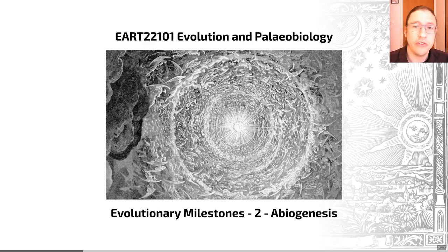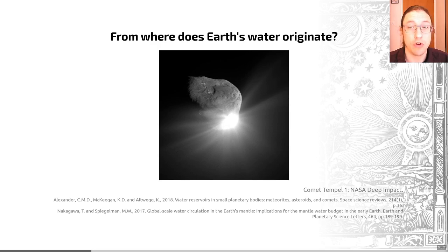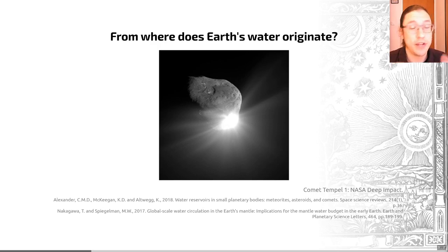The first key compound we have to consider when thinking about life as we know it on Earth is water. This is a solvent for all living things and a key source of this on early Earth was infall from asteroids and comets. There's also a potential source through the degassing of hydrated minerals in early Earth, and the relative impacts of those two potential inputs for water are currently not particularly well delineated.